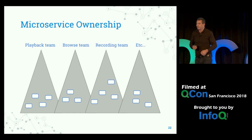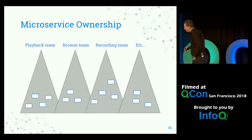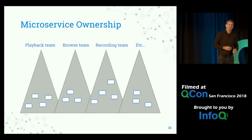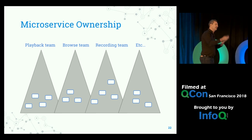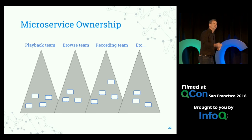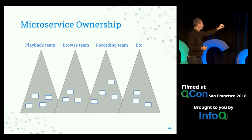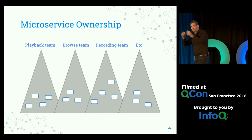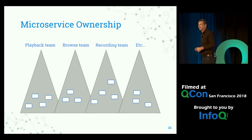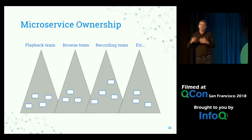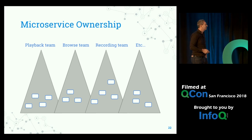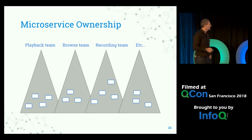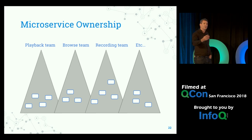Fine-grained granular microservices allowed us to perform what is known as the inverse Conway maneuver. Conway's law states that your architecture tends to resemble your organization, which means you get all of the inefficiencies associated with bad organizational structure. Because the services were so granular, we were able to reorganize our teams around the architecture and redistribute the services and ownership of those services depending on how we saw fit — a very powerful approach. Every team owned their own microservices, owning the operational side all the way from start to end.